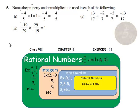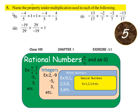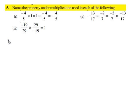Now let us move on to the fifth question. The question is: name the property under multiplication used in each of the following. Now let us consider the first bit.